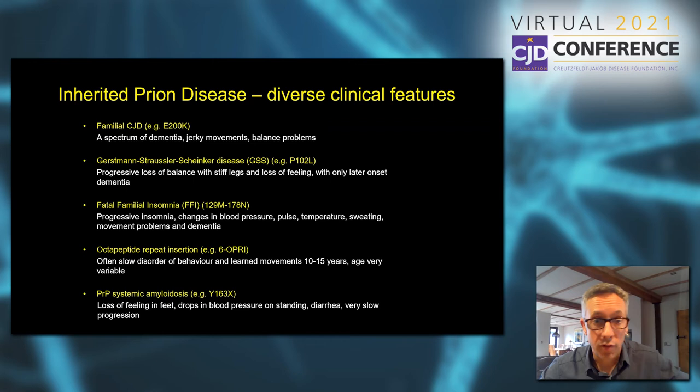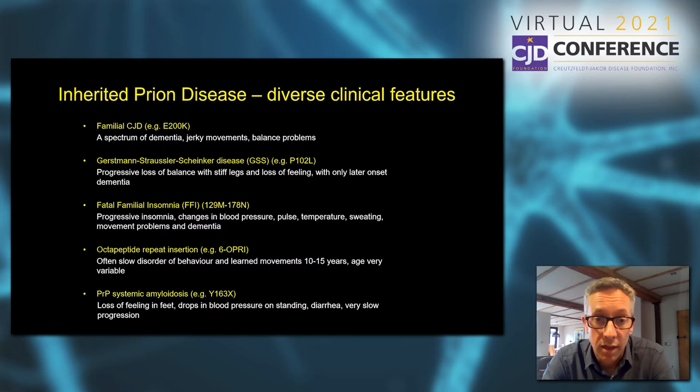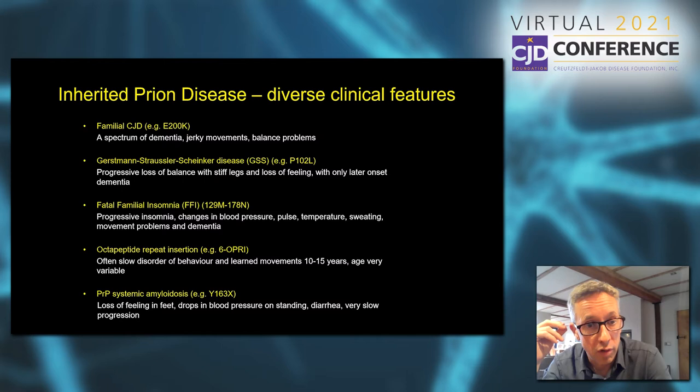Familial fatal insomnia is also relatively frequent in the inherited prion diseases worldwide. This is associated with a progressive insomnia, but changes in blood pressure, pulse, temperature, sweating and other elements of the autonomic nervous system are affected along with movement problems and dementia. It's a relatively rapidly progressive condition. We're also aware of octopeptide repeat insertions that seem to have quite a distinct phenotype — often a very slow disorder of behavior and learned movements that might last over 10 or 15 years.